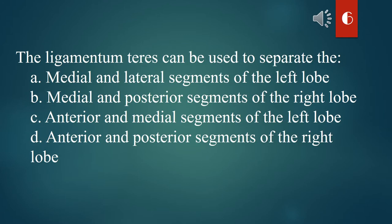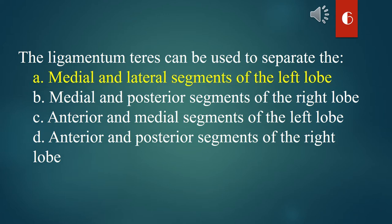The ligamentum teres can be used to separate the: A. Medial and lateral segments of the left lobe. B. Medial and posterior segments of the right lobe. C. Anterior and medial segments of the left lobe. D. Anterior and posterior segments of the right lobe. The answer is A. Medial and lateral segments of the left lobe.